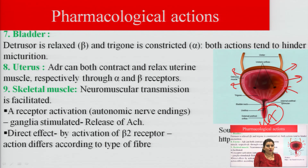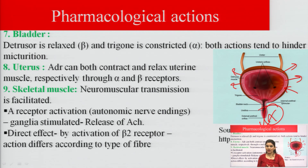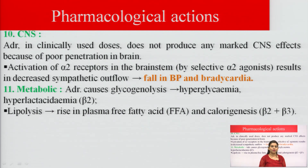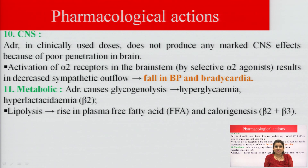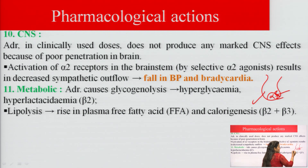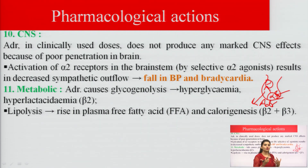On the uterus, adrenaline can both contract and relax uterine muscles. On skeletal muscle, neuromuscular transmission is facilitated by adrenaline. On the CNS, clinically used doses of adrenaline produce no marked CNS effects due to poor penetration. However, activation of alpha-2 receptors in the brain stem by selective alpha-2 agonists results in decreased sympathetic outflow, as alpha-2 is an autoreceptor that inhibits release of its own neurotransmitter.